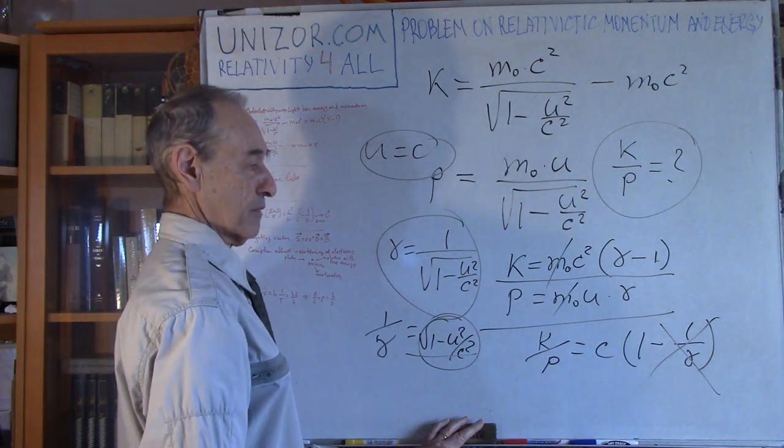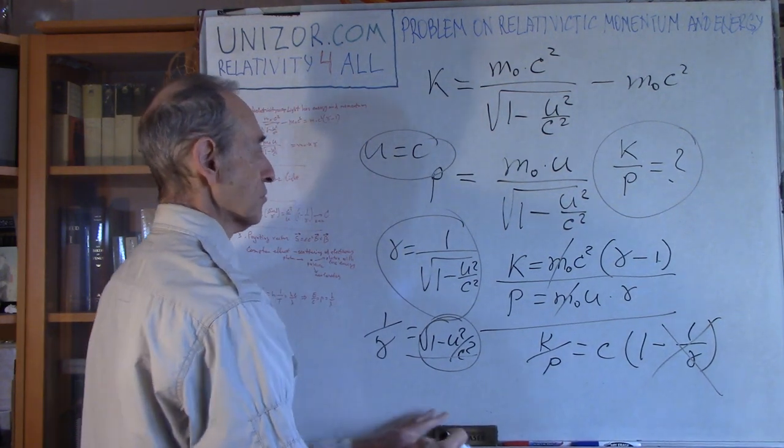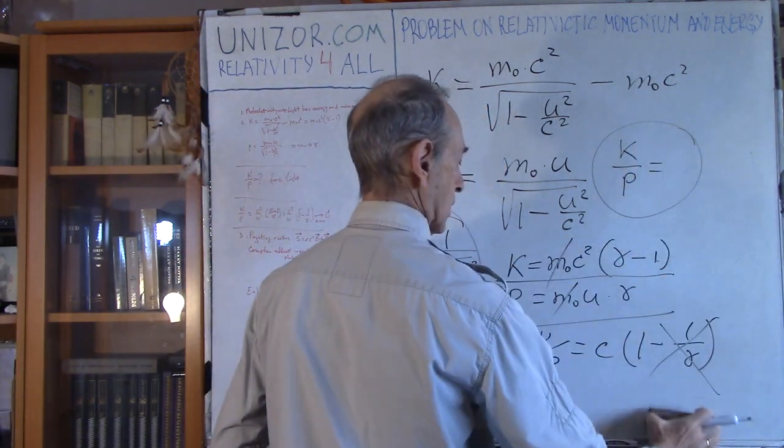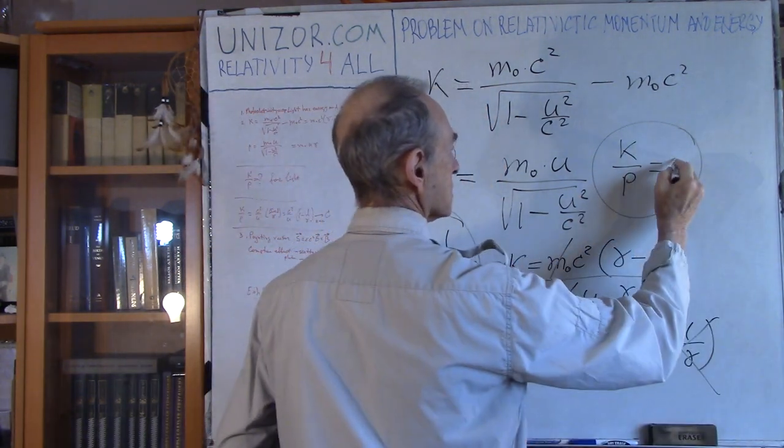In case u equals c, this is just equal to zero. So what do I have? A very simple equation: K over p equals c.